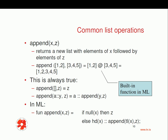Now let's look at some common list operations. Append is quite common — it takes two parameters, x and z, and returns a new list with the elements of x followed by the elements of z. So `append([1,2], [3,4,5])` is actually equal to `[1,2] @ [3,4,5]`, because `@` is a built-in append operator in ML.